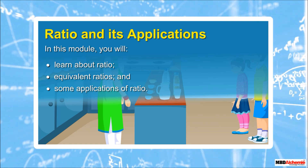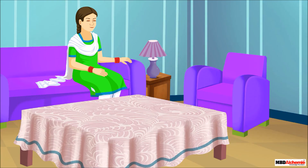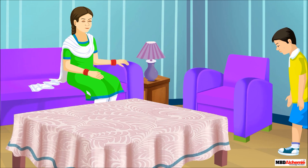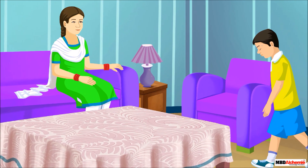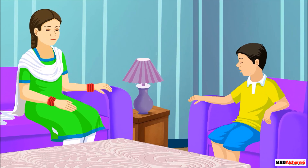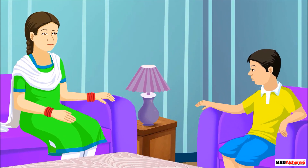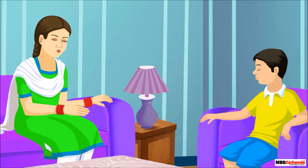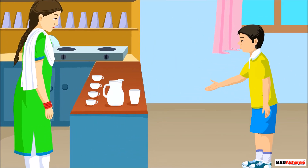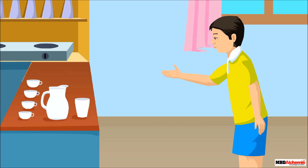Mom, I'm thirsty. Please make a glass of orange drink for me. Okay, wait. Mom, I want to see how to make it so that I'll be able to make it for my friends when they come in the evening.